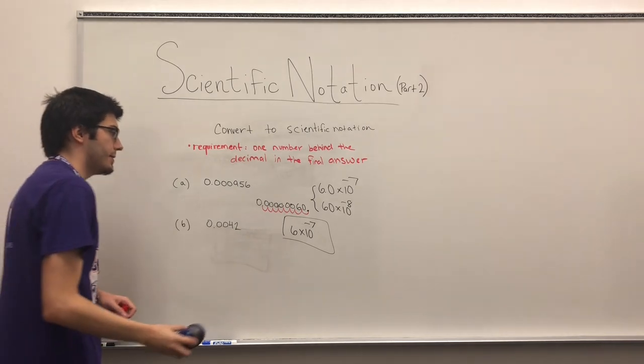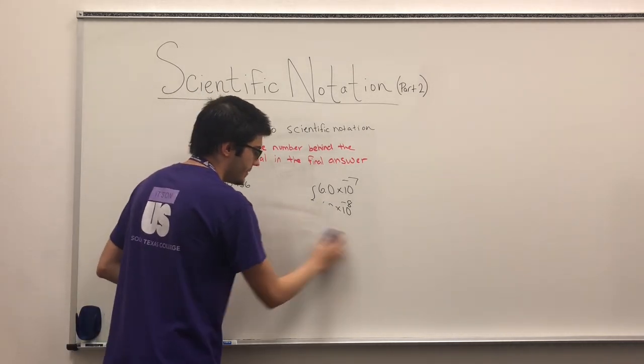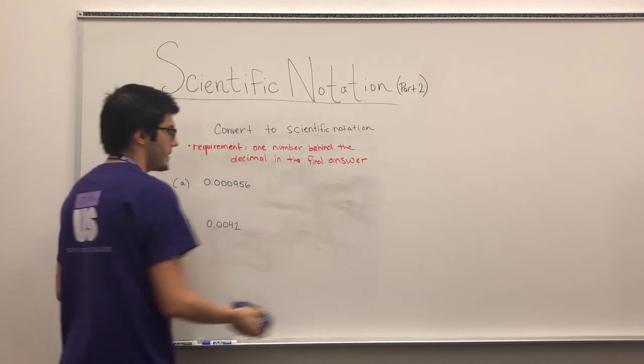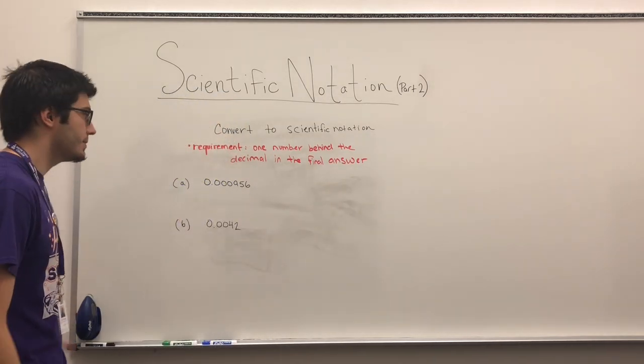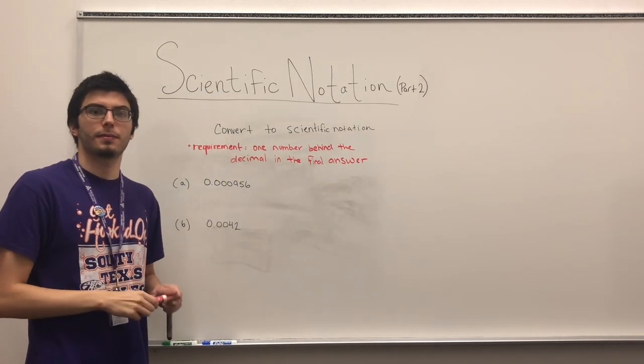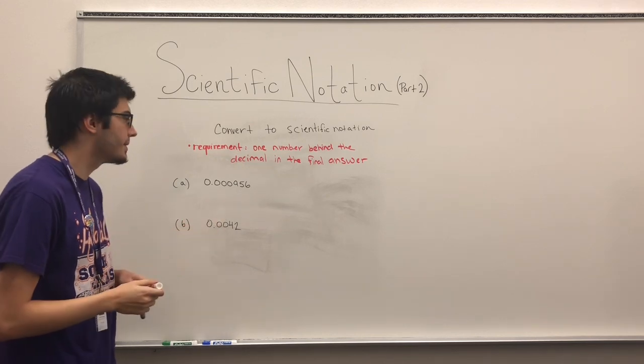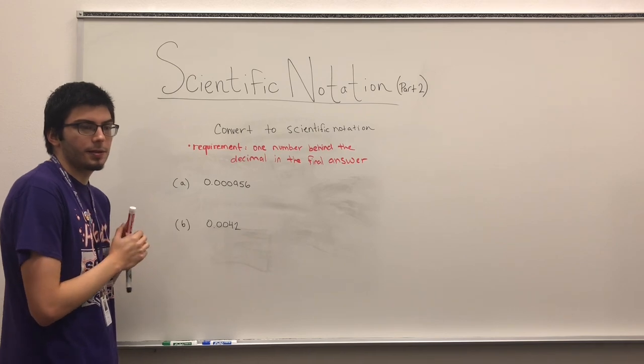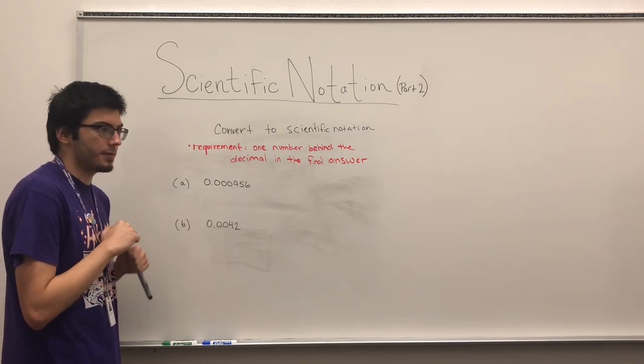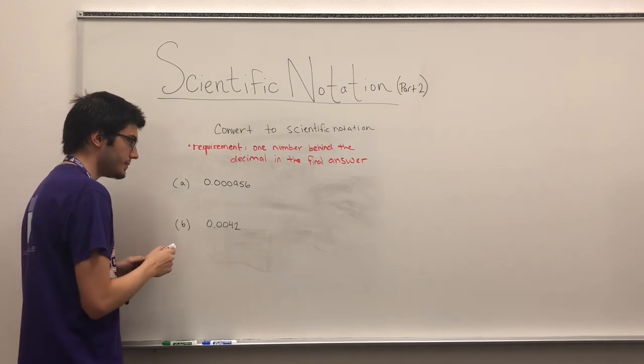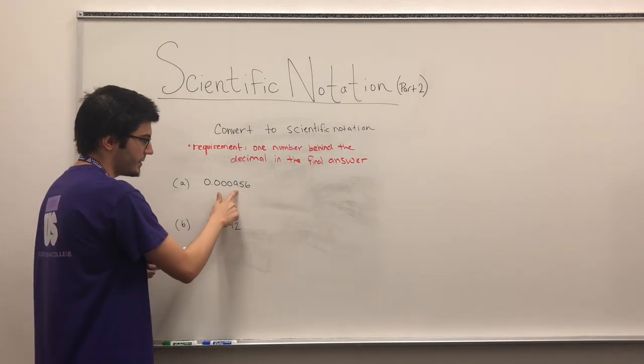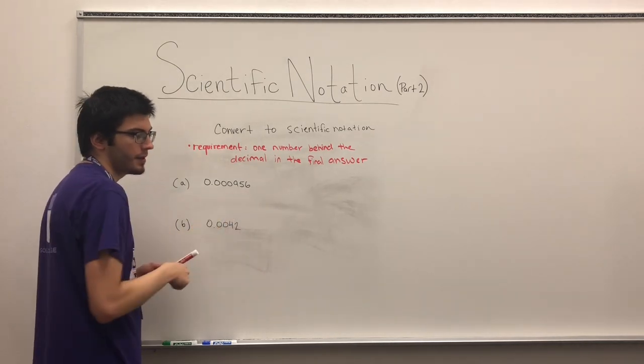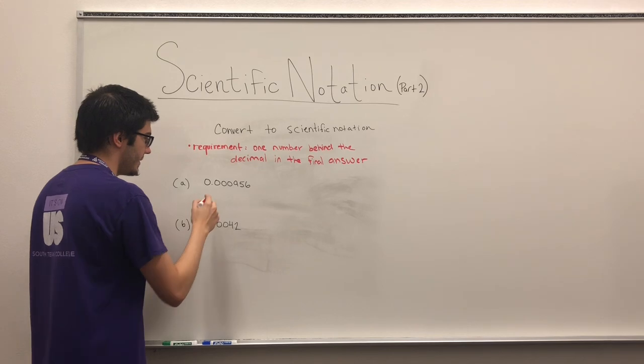All right, and so let's not make this super confusing. And let's do some simple examples to kind of make it make sense. All right, so the first thing, what you're going to do is you're going to stop right when you hit your first non-zero number. So my first non-zero number will be nine. So right after I pass nine, I stop.